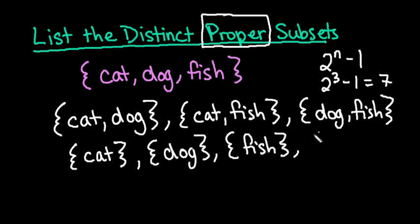And then don't forget that you always have to include, whether you're talking about a distinct proper or whether you're talking about just distinct subsets, the empty set is always included in your list of the distinct proper subsets.